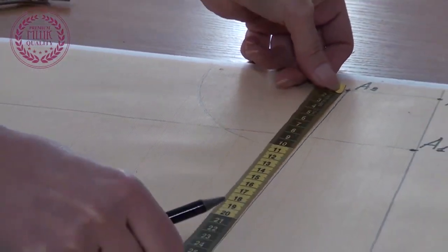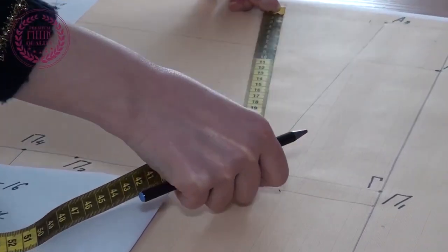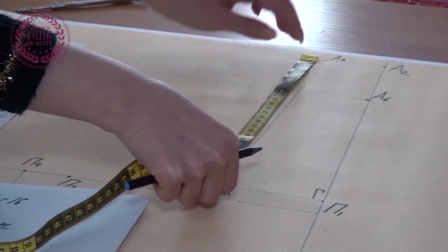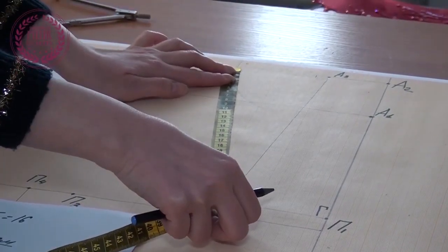I measure the length of the line from point A3 to the bust point, and make a second arc with a centimeter tape until it intersects with the first arc.